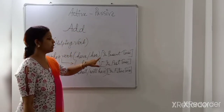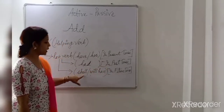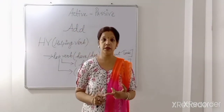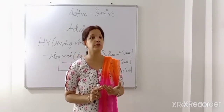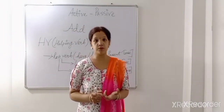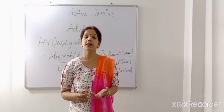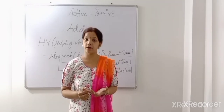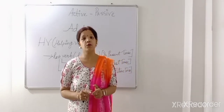For have verbs in passive voice: in present tense we use 'has' or 'have'. With a singular subject — like third person singular number — we use 'has'. With plural subjects and first and second person, we use 'have'. In past tense we use 'had', and in future tense we use 'will have' or 'shall have'. You should keep these things in mind — what are the be verbs and what are the have verbs.